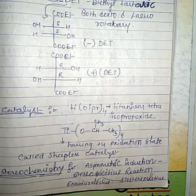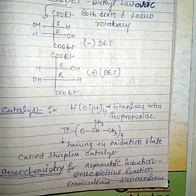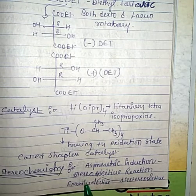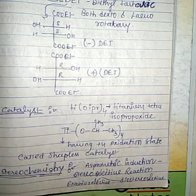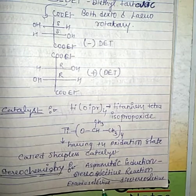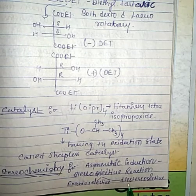Next we see the stereochemistry of Sharpless asymmetric epoxidation. Asymmetric induction occurs and a stereoselective reaction also takes place. Stereoselective reactions are of two types: the first is enantioselective and the second is diastereoselective.